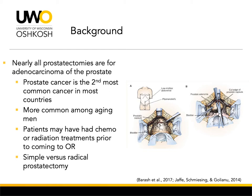A radical prostatectomy involves the removal of the entire prostate gland, seminal vesicles, in addition to the surrounding nerves and veins, and part of the urethra within the prostate gland's transition zone is also removed.